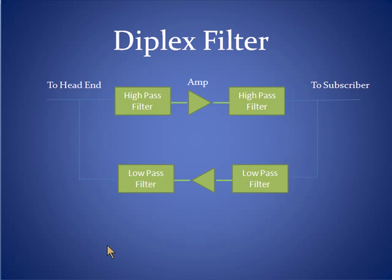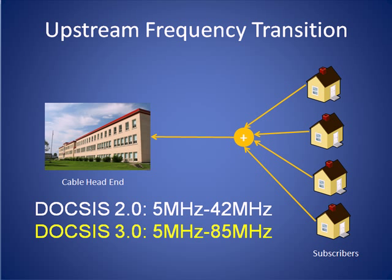The presence of older diplex filters and supporting amplifiers represent a problem for the cable companies because they are often hardwired to certain frequencies to support the existing map and cannot easily be retuned to support new frequencies, as is required for the new DOCSIS 3.0 standard.